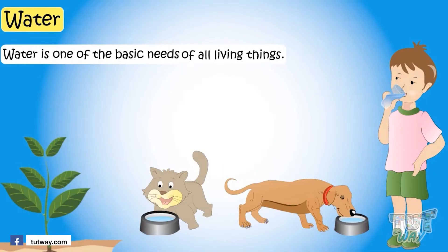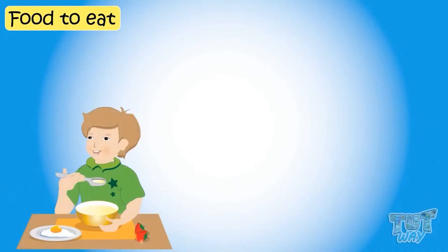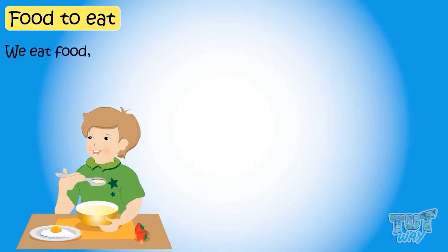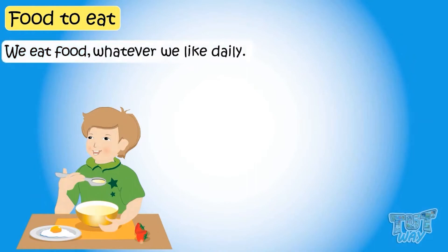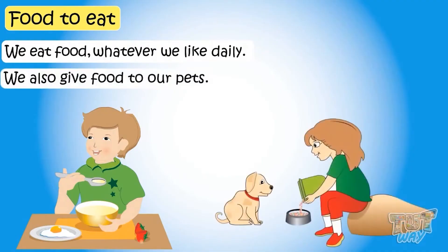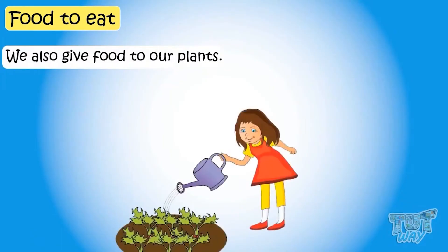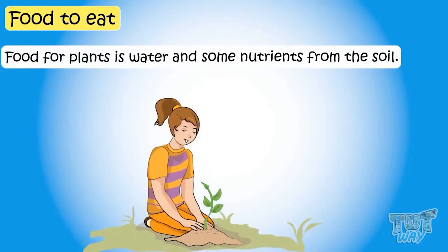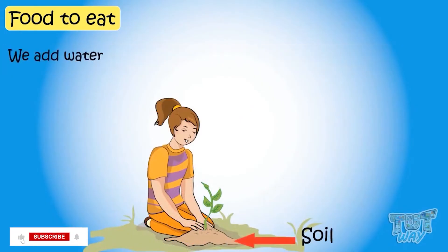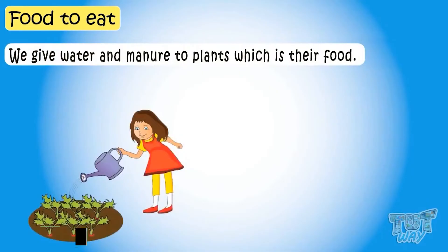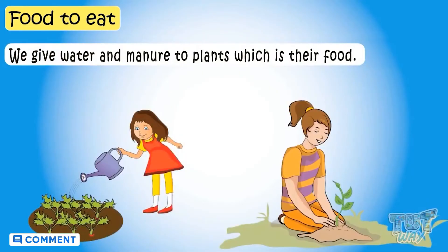Now let's learn another basic need of living things — food to eat. We all eat food, don't we? Yes, we eat food whatever we like, daily, so many times a day, and we also give food to our pets. Food for plants is water and some nutrients from the soil. We add water and manure to soil as food for plants.